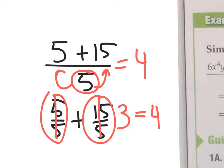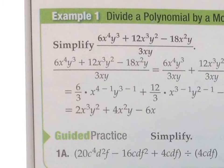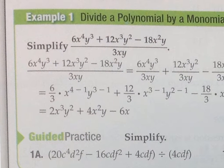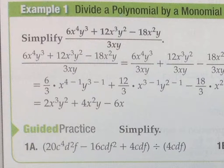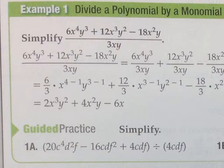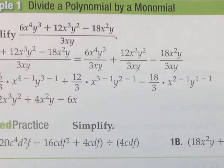So when you have a denominator down there with only one term, you can split it to each of the terms that you're adding or subtracting up on top. Going back to the book example, they simply take the 3xy and place it underneath the first, second, and third terms. So they split it up — there's a 3xy, 3xy, 3xy underneath each term.